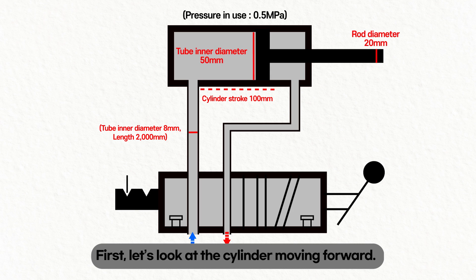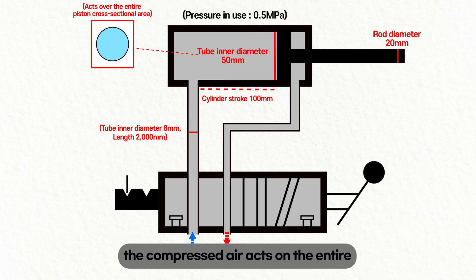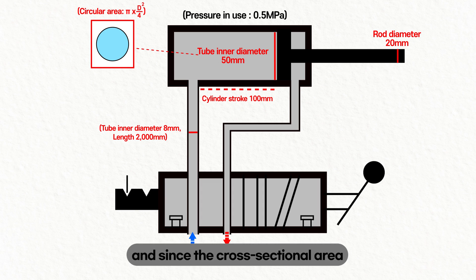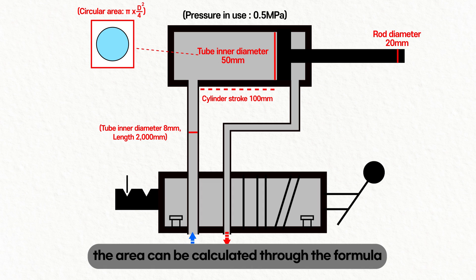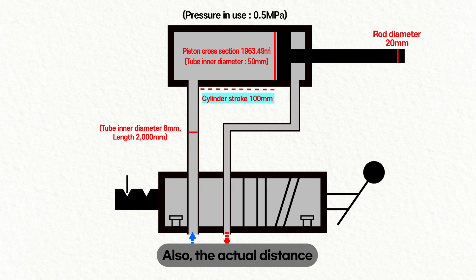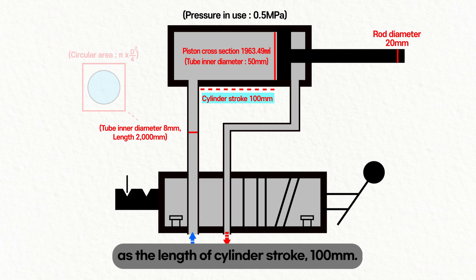First, let's look at the cylinder moving forward. Inside the cylinder, compressed air acts on the entire cross-sectional piston area. Since the cross-sectional area of the piston is circular, the area can be calculated using the formula for bore diameter and circle area. The actual distance that compressed air moves is the same as the length of the cylinder stroke: 100 millimeters.